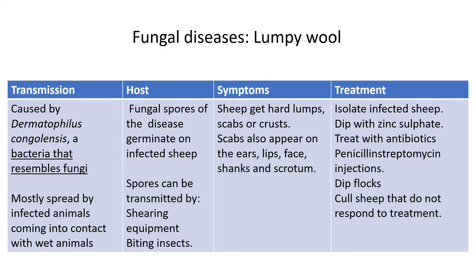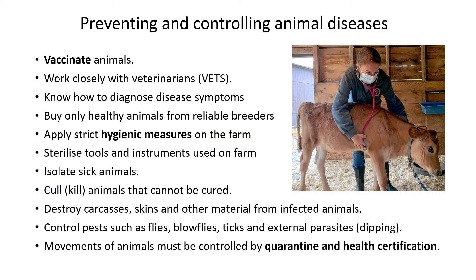For preventing and controlling animal diseases, first and most obviously: vaccinate your animals against bacterial, viral, protozoan, and fungal diseases. Farmers should work closely with vets — if anything looks wrong, call the vet. Know how to diagnose diseases by looking at symptoms. Buy only healthy animals from reliable breeders so you have animals that are naturally immune to certain viruses and bacterial diseases.